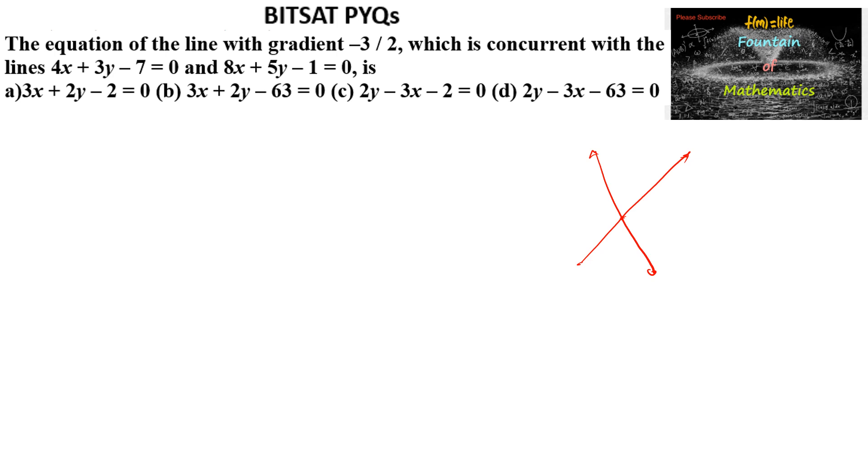The line is passing through and whose gradient is minus 3 by 2. So we need to find a line which is passing through the point of intersection of these two lines and whose slope is minus 3 upon 2.